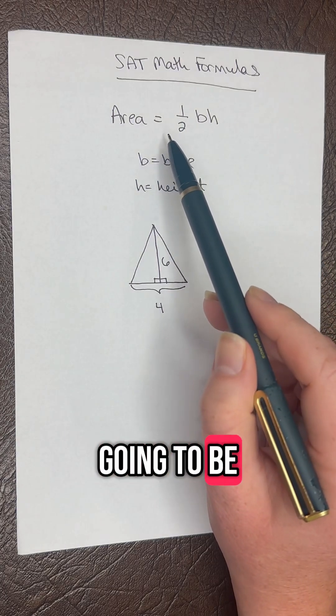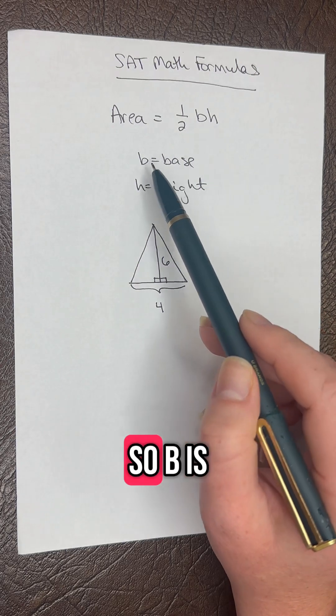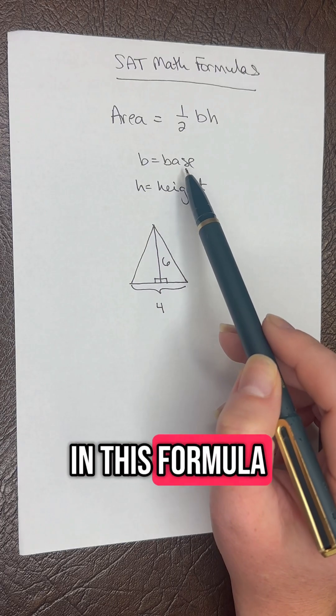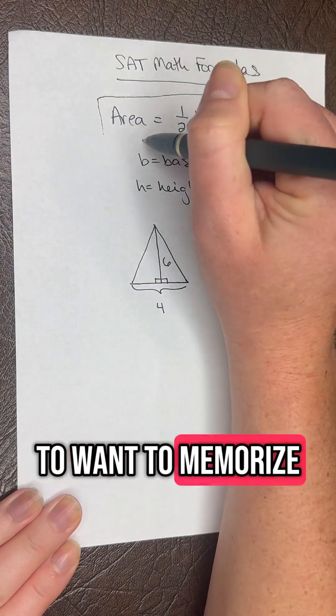Area is equal to one half times the base times the height. B equals the base in this formula, H equals the height. This is something you're going to want to memorize.